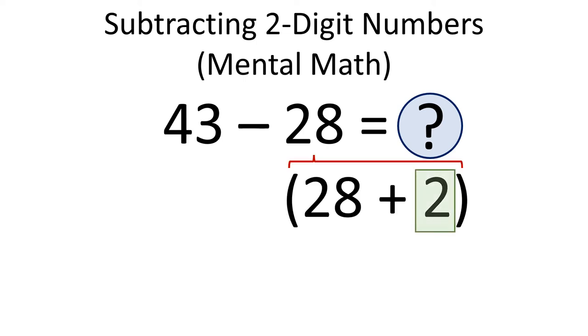To turn 28 to 30, we have to add 2 to it. But if we are adding something to one number, we also have to add the same to the other number.